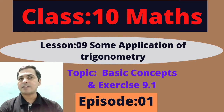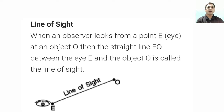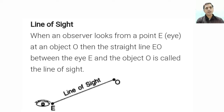Let us see the basic things of this chapter. Line of sight: when an observer looks from a point E at an object O, then the straight line EO between the eye E and the object O is called the line of sight. From E to O, this line is the line of sight.